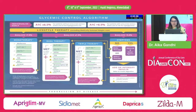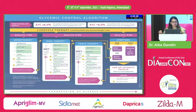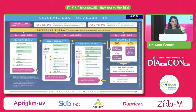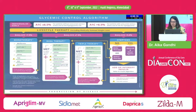We also need to understand the entry-level A1C. If A1C is less than 7.5, start with monotherapy. If more than 7.5, start with dual therapy — metformin plus any other agent. If not controlled, up-titrate to triple therapy. If entry-level A1C is more than 9 or 9.5 and the patient has symptoms, start insulin. If not symptomatic or no catabolic signs, start with dual or triple therapy.